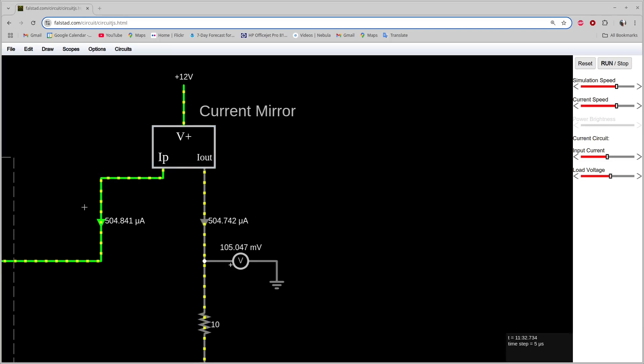We apply a current to the programming terminal and a load to the output terminal. The load will get a current equal to the applied current.